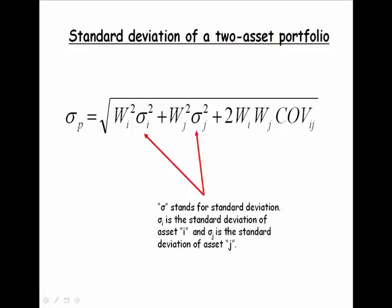Sigma stands for standard deviation. Sigma I is the standard deviation of asset I. Sigma J is the standard deviation of asset J.